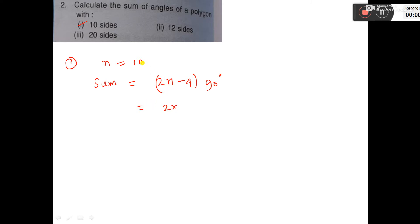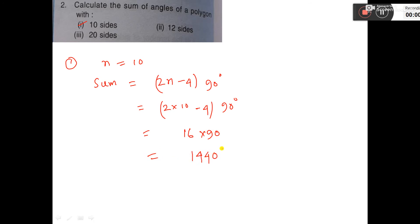...the value of n, which is 10, minus 4, into 90 degrees. So 20 minus 4, that is 16 into 90. So 1440 degrees. This is the answer.